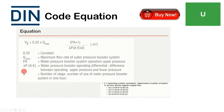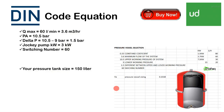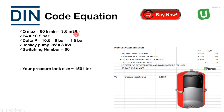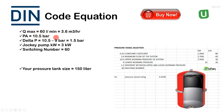S, the switching number, is determined according to the kilowatt rating of your jockey pump. Qmax equals 60 liters per minute, which equals 3.6 cubic meters per hour — and must be entered in cubic meters per hour. PA equals 10.5 bar, which is the maximum no-flow pressure.